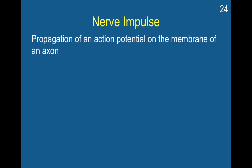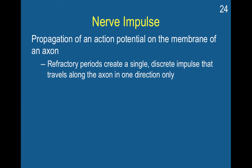Once an action potential begins, it cannot be stopped. An action potential propagates down the membrane of an axon. The refractory period creates a single discrete impulse that travels along the axon in one direction only — it starts going and it can't go backward.